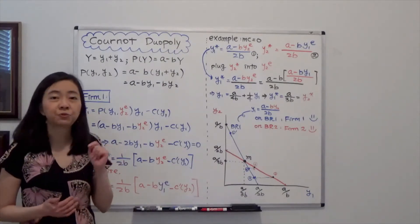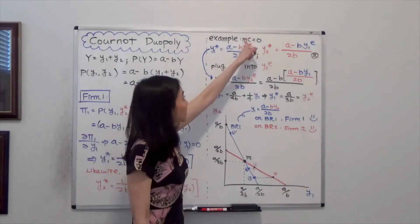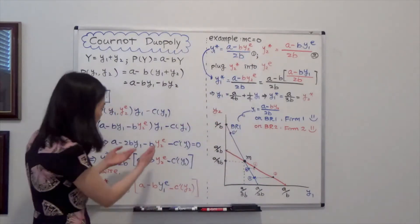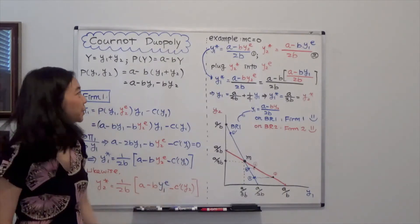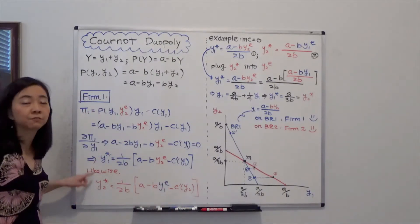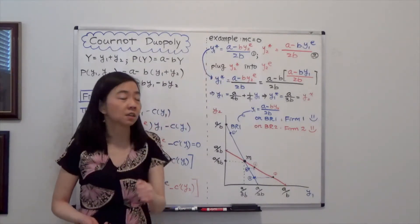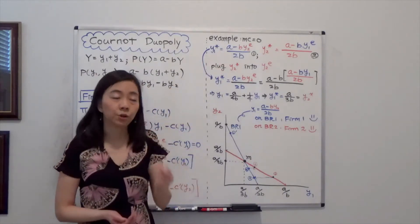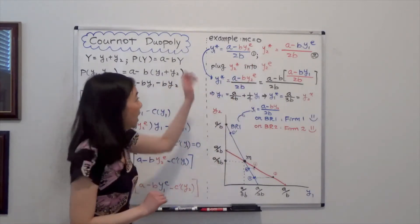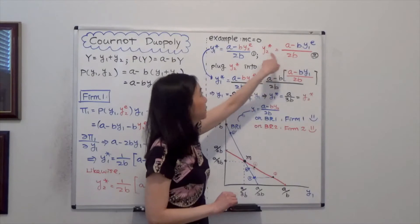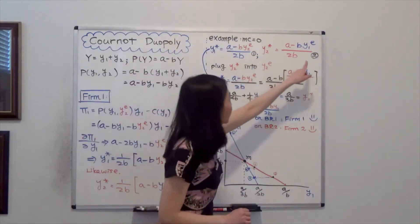Moving on to the example, which is a bit more simplified. Varian assumes that marginal cost is equal to 0 for both firms, so C'(Y1) and C'(Y2) are both 0. We can rewrite the best response function: firm 1's best response Y1 star equals A minus B times Y2E divided by 2B. Firm 2's best response function is a mirror of firm 1's. We call these equation 1 and equation 2.